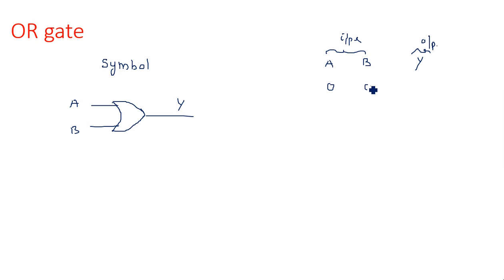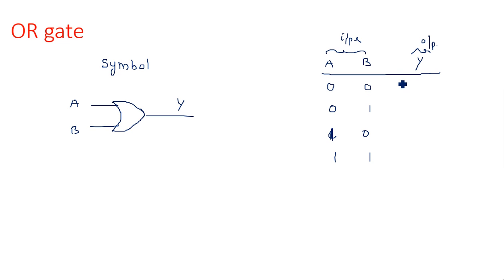With two inputs A and B, there are 2 power 2 — that is, four combinations: 0 0, 0 1, 1 0, and 1 1. For these inputs, the outputs are: 0 0 gives 0, 0 1 gives 1, 1 0 gives 1, and 1 1 gives 1.